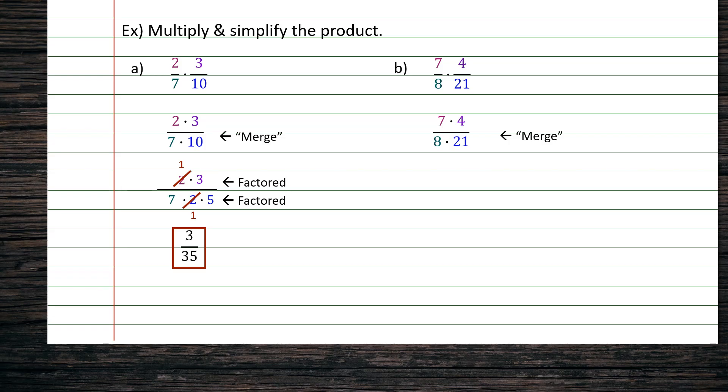From here, again, in an effort to keep the numbers small, we are going to factor the values individually. Looking in the numerator first, our first numerator is 7. Remember, 7 is prime. It cannot factor, so we move to the other numerator being a 4. 4 can factor into the values of 2 times 2.